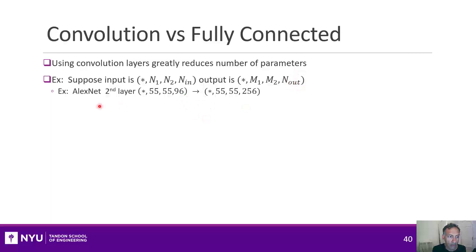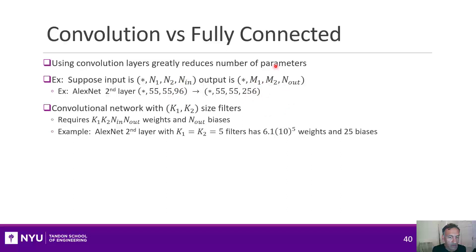So, for example, in the second layer of AlexNet, you have these parameters here. About 55 by 55 images with 96 channels going up to 256 channels.